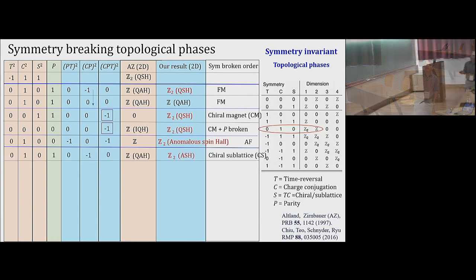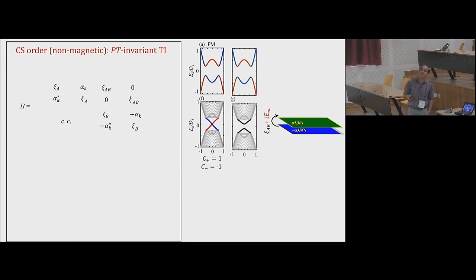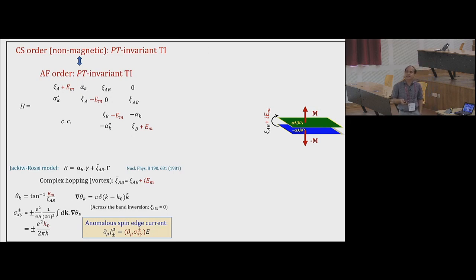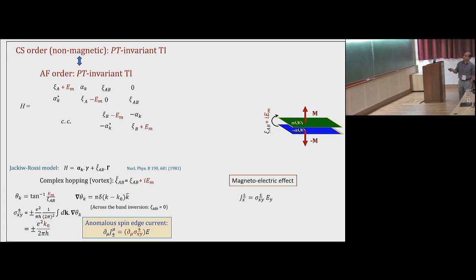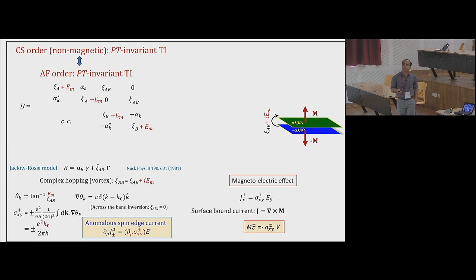Any varying non-quantized Hall effect gives an anomalous current — that is the anomalous spin-Hall current. The chiral sublattice order is exactly the same as antiferromagnetism, so everything discussed for the anomaly remains the same. In addition, one can think of a magneto-electric effect: if you have a spatially dependent Hall effect, the gradient of that Hall effect also gives a current. With Hall conductance +1/2 on one side and −1/2 on the other, there will be a current between them that gives a magnetization proportional to the applied voltage — a magneto-electric effect.